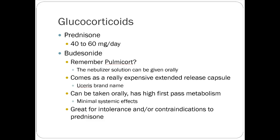A recently released capsule called Uceris is a brand-name budesonide product specifically designed for this indication. The nebulizer solution is probably cheaper, but the capsule is designed to release in a way that covers the whole GI tract, making it potentially more effective. It just depends on what the patient can afford.